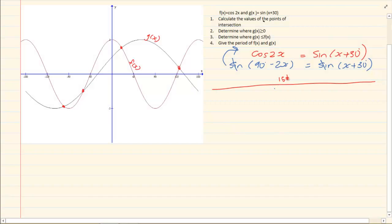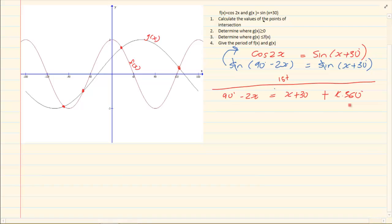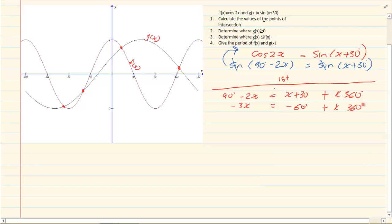The first quadrant gives us 90° − 2x = x + 30° + k·360°. Why 360°? Because the period of a standard sin graph is 360°, so after 360° it starts repeating. Solving for x: −3x = 30° − 90° = −60° + k·360°. Dividing by −3 throughout gives x = 20° + k·120°.